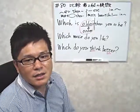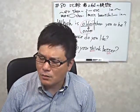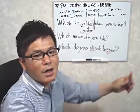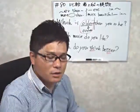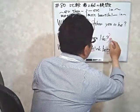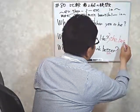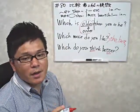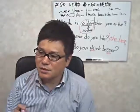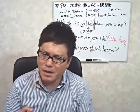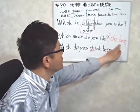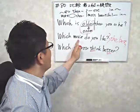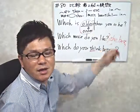比較級の聞き方の次は、最上級の聞き方ですね。「この中でどれが一番好き？」と聞くときは「which movie do you like the best?」という形になります。「the best」をつけることで「一番好きな」という最上級の意味になります。